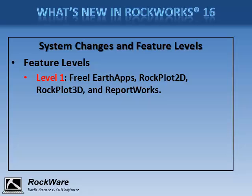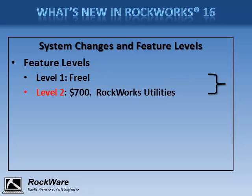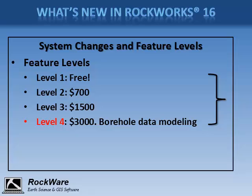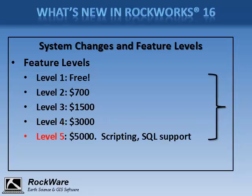RockWorks now offers more feature levels so you can purchase just the programs that you need. Level 1 is available at no charge and contains all of the Earth Apps programs, RockPlot 2D, RockPlot 3D, and ReportWorks. Level 2 costs $700 for a single license and contains all Level 1 features plus the RockWorks utilities. Level 3 costs $1,500 and adds the Borehole Manager, Maps, and Strip Logs, but does not include the modeling tools. Level 4 costs $3,000 and adds all Borehole Manager menus including modeling tools. Level 5 costs $5,000 and adds scripting and SQL database support.